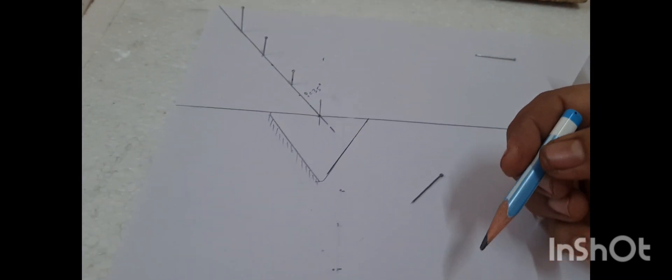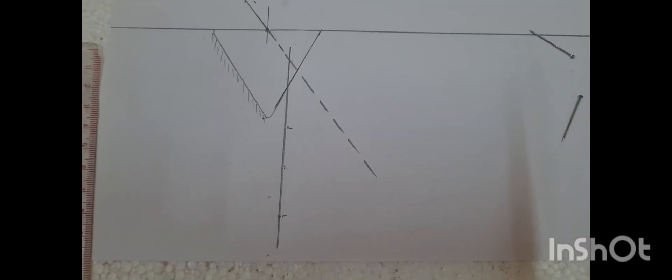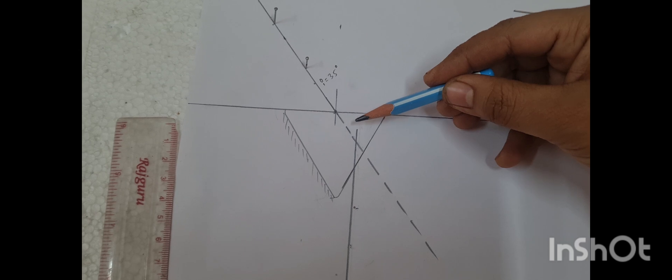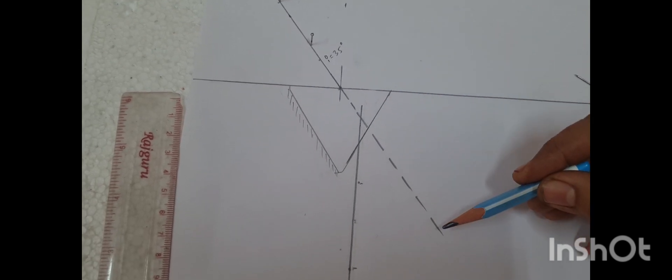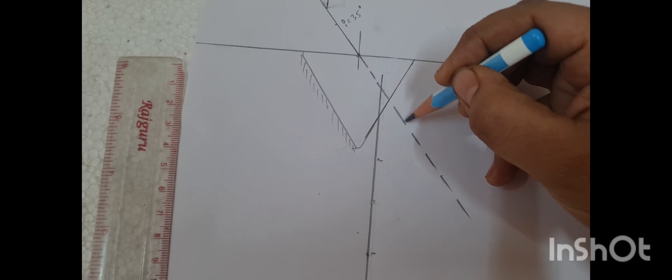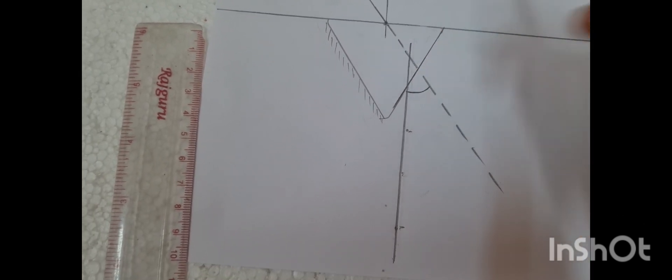Extrapolate the incident ray. Here is the emergent ray and this dotted line is the extrapolation of the incident ray. The angle between these two rays is nothing but the angle of deviation.